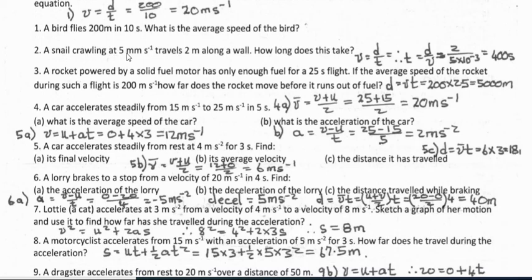Question 2: a snail is crawling at 5 millimeters per second and travels 2 meters along a wall — how long does this take? Rearranging the speed equation for time: total distance divided by average speed gives 2 divided by 5×10⁻³, which equals 400 seconds.